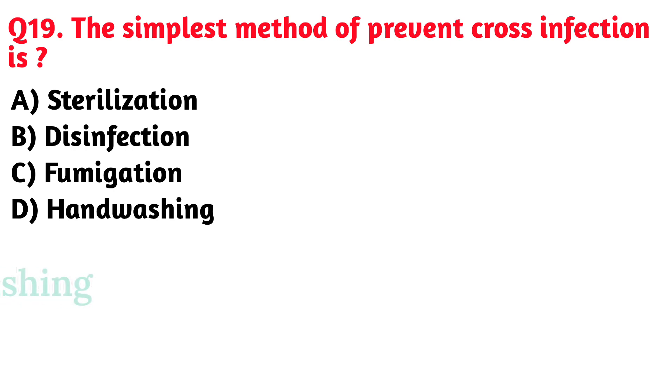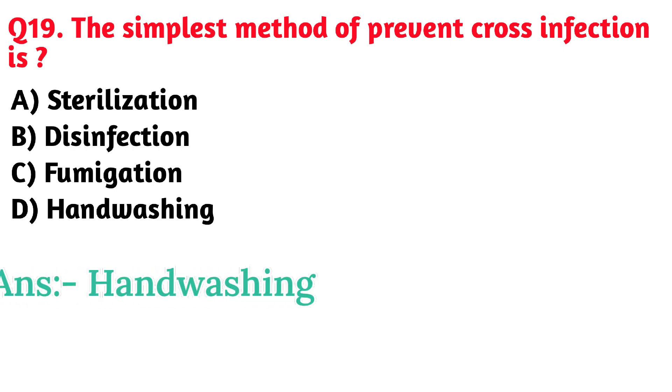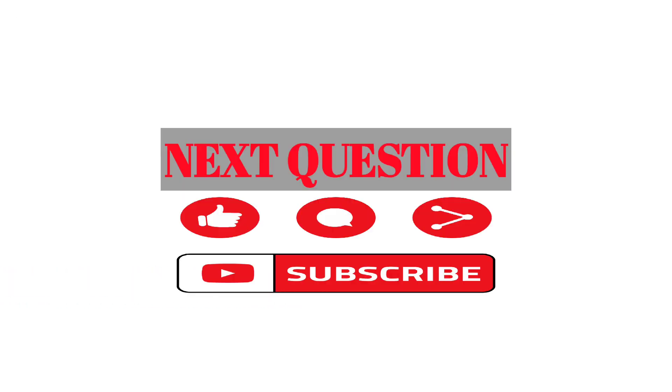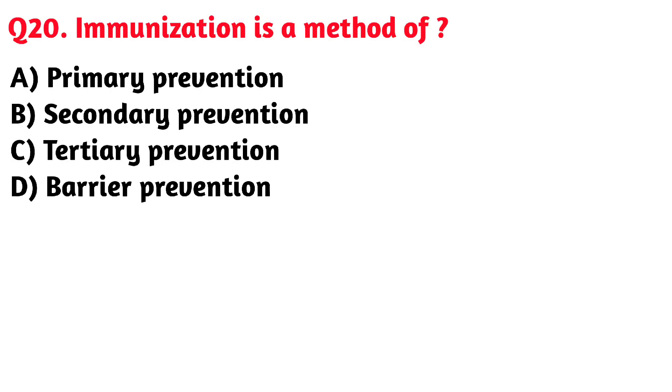Next question: The simplest method to prevent cross infection is. Option D. Hand washing is the correct answer.